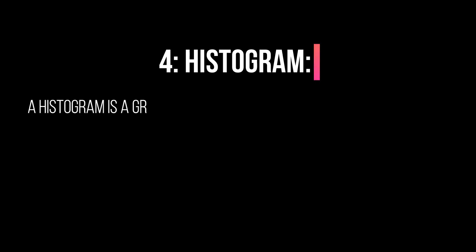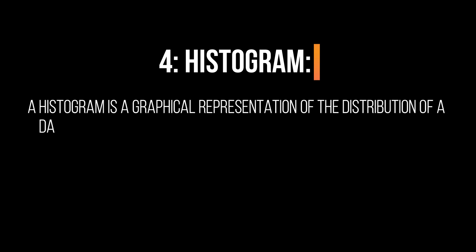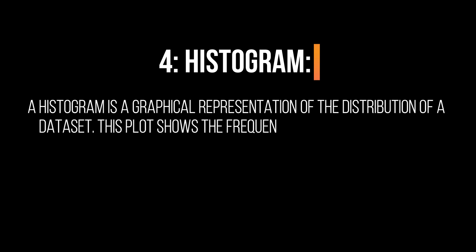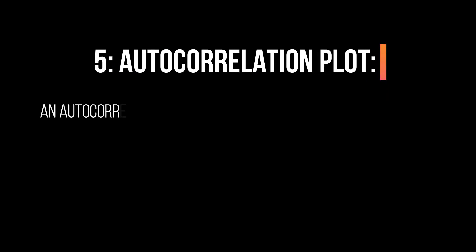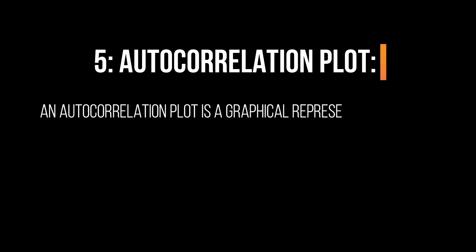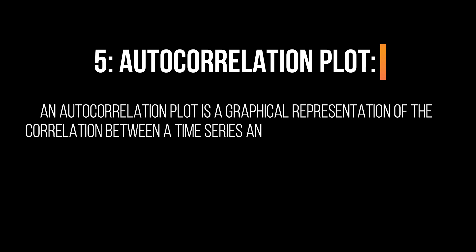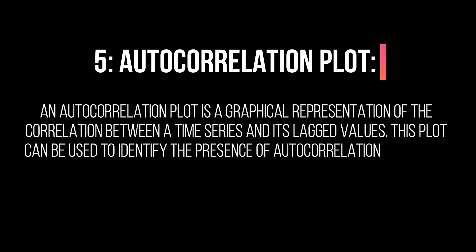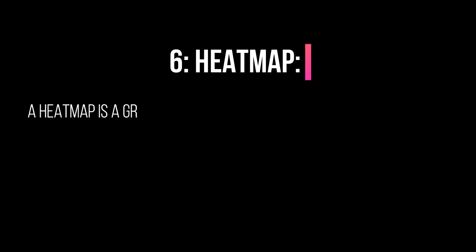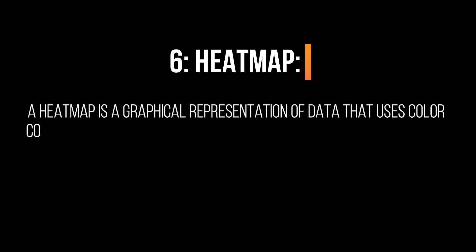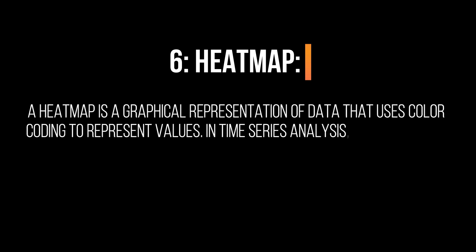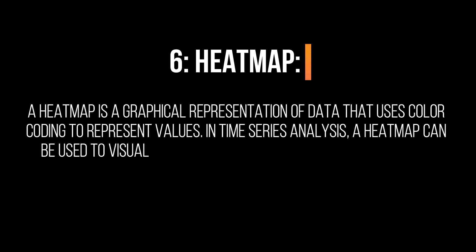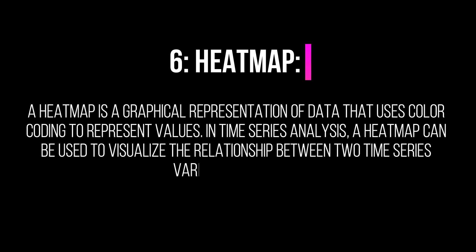4. Histogram: A histogram is a graphical representation of the distribution of a data set. This plot shows the frequency of values in different intervals. 5. Autocorrelation Plot: An autocorrelation plot is a graphical representation of the correlation between a time series and its lagged values. This plot can be used to identify the presence of autocorrelation in the time series data. 6. Heat Map: A heat map is a graphical representation of data that uses color coding to represent values. In time series analysis, a heat map can be used to visualize the relationship between two time series variables over time.